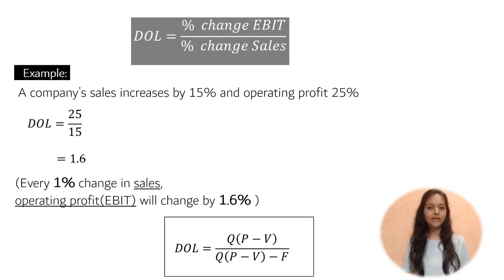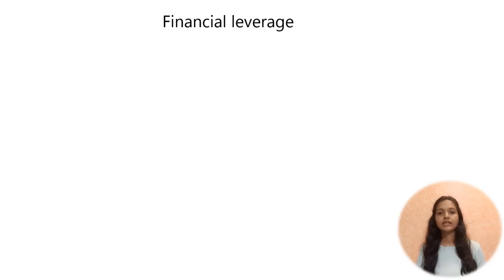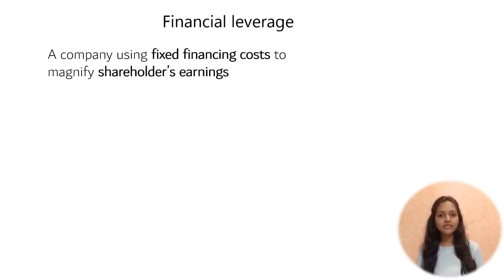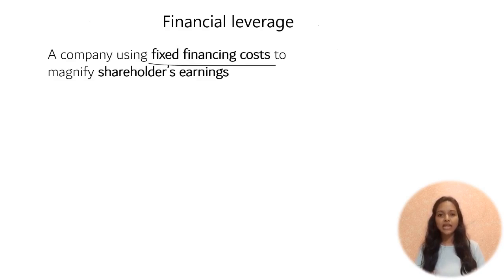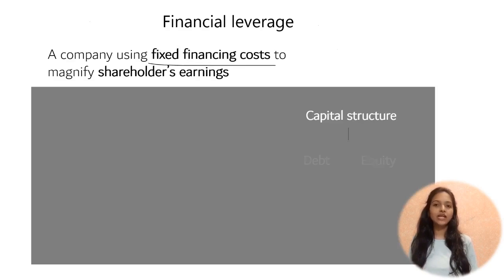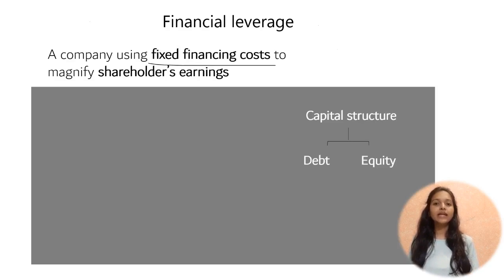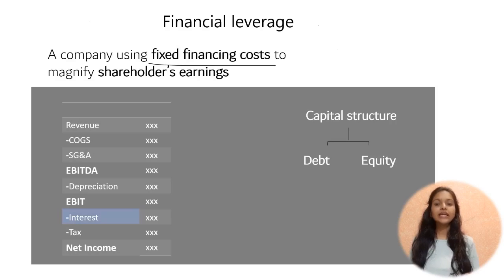That was all about operating leverage. Next, financial leverage. This type of leverage tells us to what extent a company is using fixed financing costs to magnify shareholders' earnings. Fixed financing cost means the interest on debt. A company's basic capital structure has both debt and equity. When funds are raised through debt, they carry a fixed charge like interest rates which must be paid no matter what.